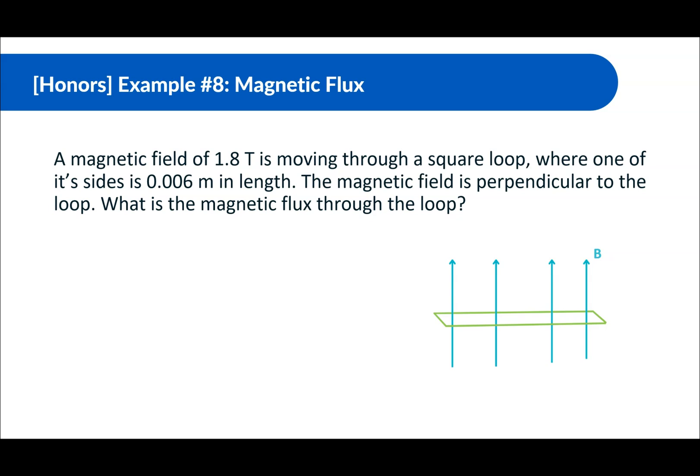A magnetic field of 1.8 Tesla is moving through a square loop, where one of its sides is 0.006 meters in length. The magnetic field is perpendicular to the loop. What is the magnetic flux through the loop? Okay, so this side here is 0.006, and this side here is 0.006. I know it might look a little bit different, but we're at an angle, so it's a lot harder to see, but it does say it's a square.